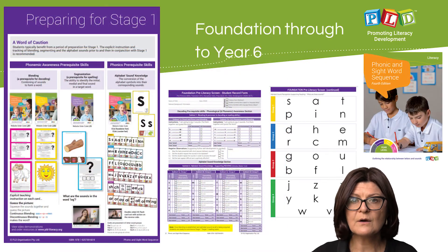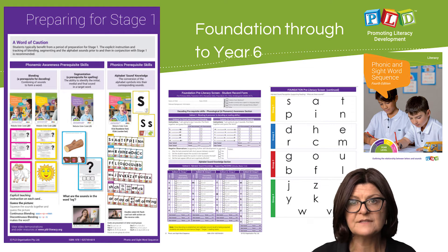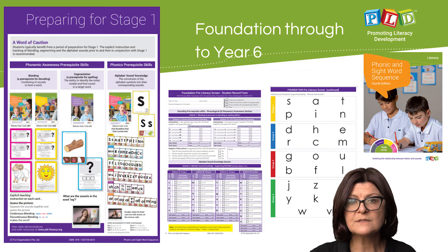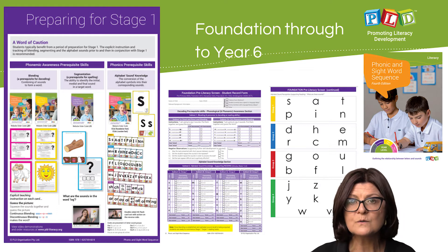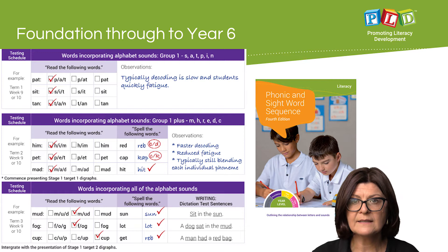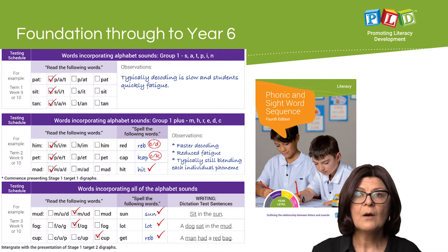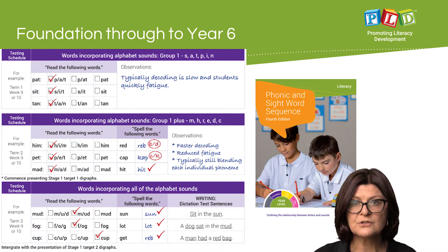There is a focus in this new edition on the Foundation level, in which students are prepared for Stage 1, focusing upon their alphabet sounds but also the phonemic awareness skills of blending and segmenting. The relevant assessment formats are also contained within this text. Within the Foundation section, it outlines how students read first, spell second, and write third, and how, by mid-year and later in the year, that skill progression should be occurring.